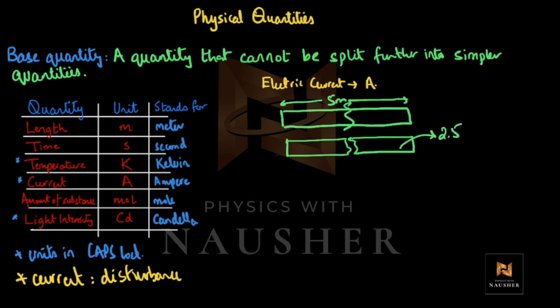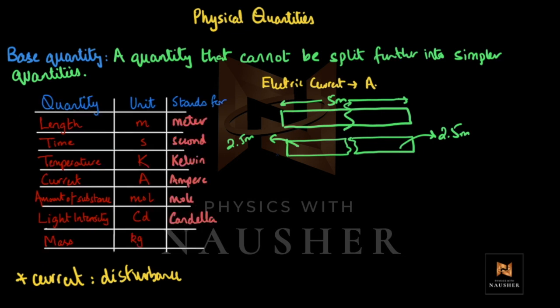What is the unit of that 2.5? Not Kelvin, not ampere, not kilograms — it is 2.5 meters. And this part is also 2.5 meters. I also forgot one very important quantity in the table: mass. Mass is another base quantity, and its unit is kilogram (kg).